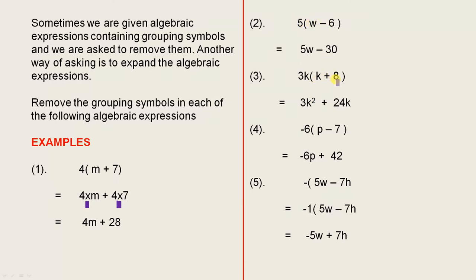3k outside of k plus 8. 3k by k is 3k squared, and 3k times 8 is 24k.